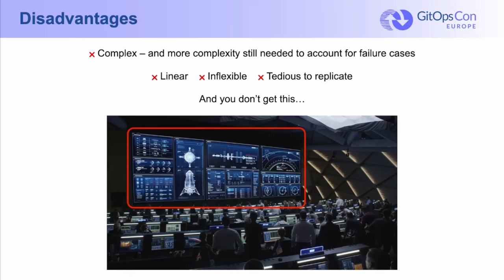Another problem is that it's linear and inflexible. It can take the latest change from one stage to the next, but how does it handle rollbacks, for instance? Or what if you want to return one stage to some arbitrary state — say you want to make dev look like it looked last Monday? It's just another thing that makes this already complex process even more complex. This is also incredibly tedious to replicate if you have dozens, hundreds, or even thousands of applications that need to follow this same process, perhaps with small variations from app to app.